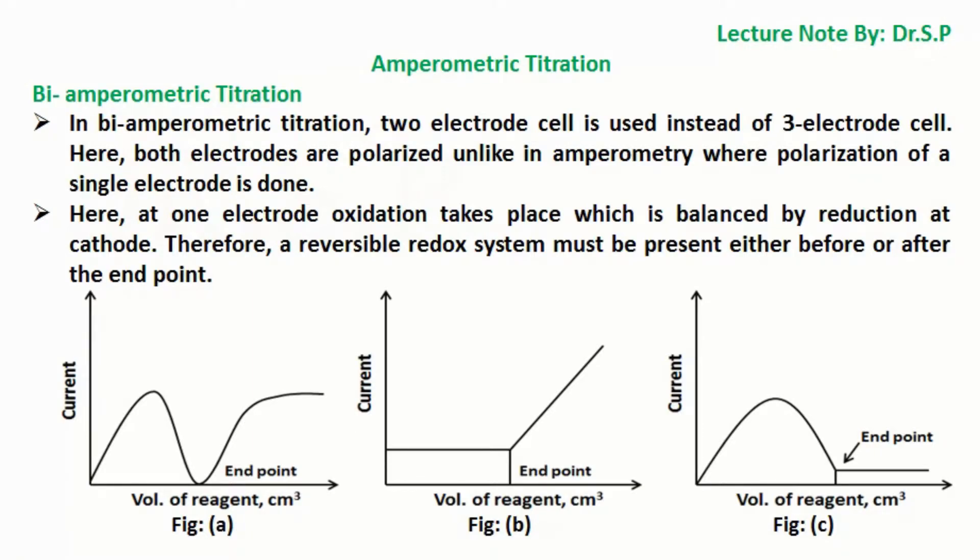Here, curve A is an example of titration curve when both the reactant behaves reversibly at the electrode. For example iron 2 with cerium Ce⁴⁺. In this system both iron 2 or iron 3 and cerium 4 or cerium 3 system behaves reversibly at the platinum Pt electrode.